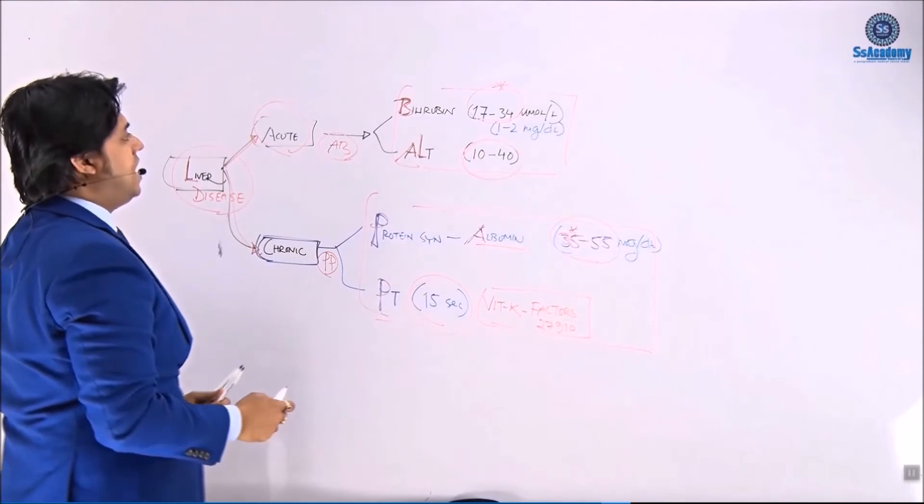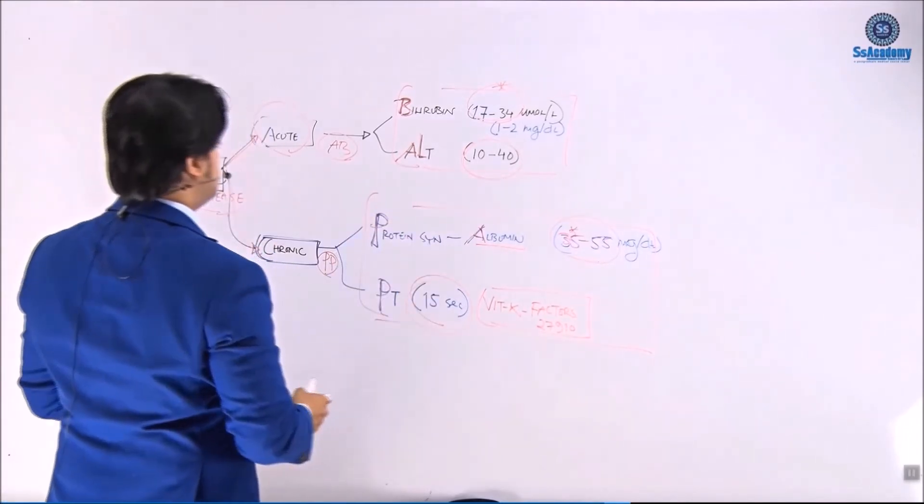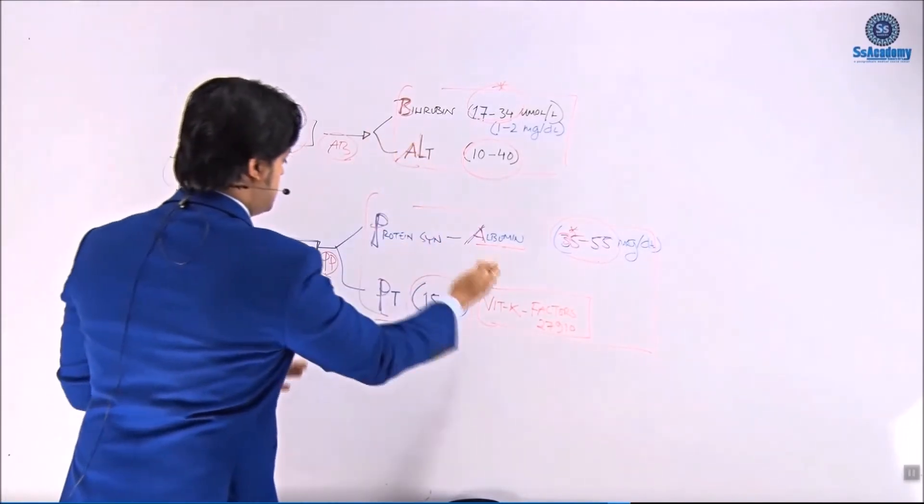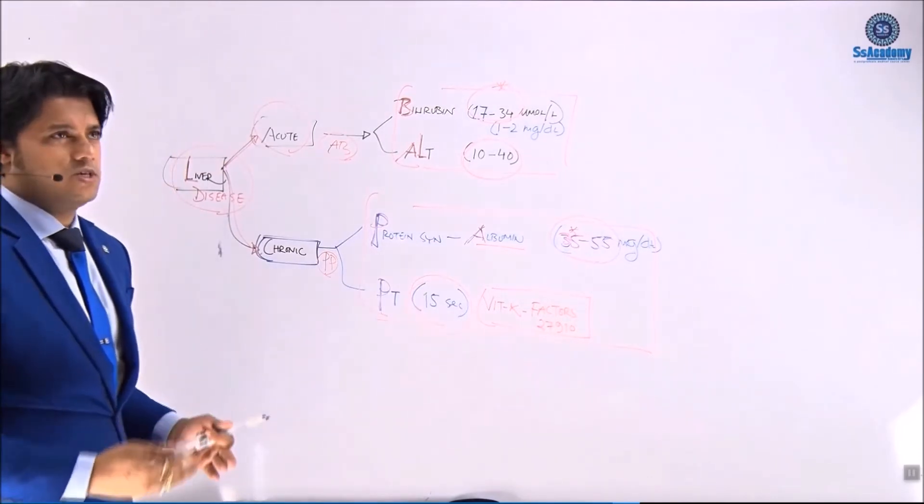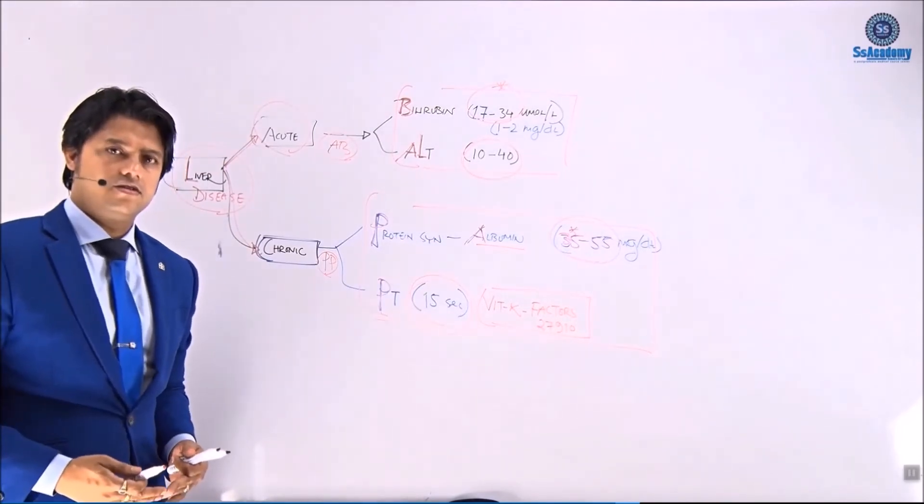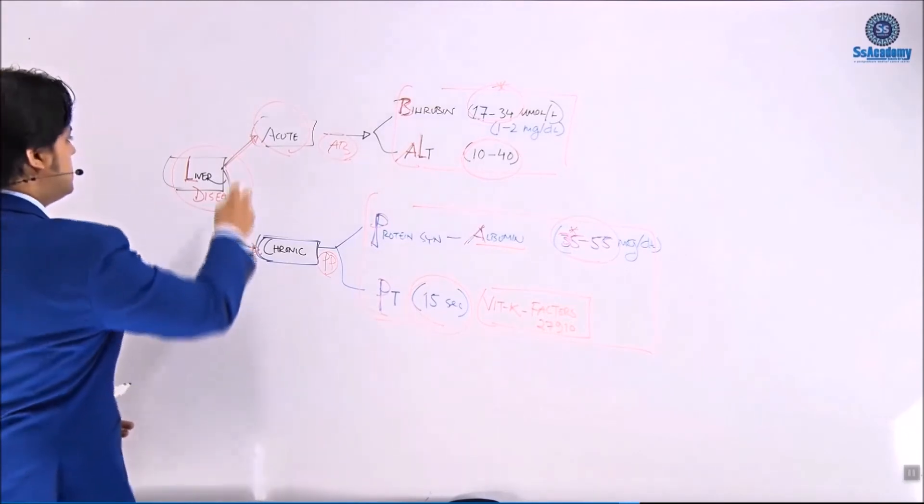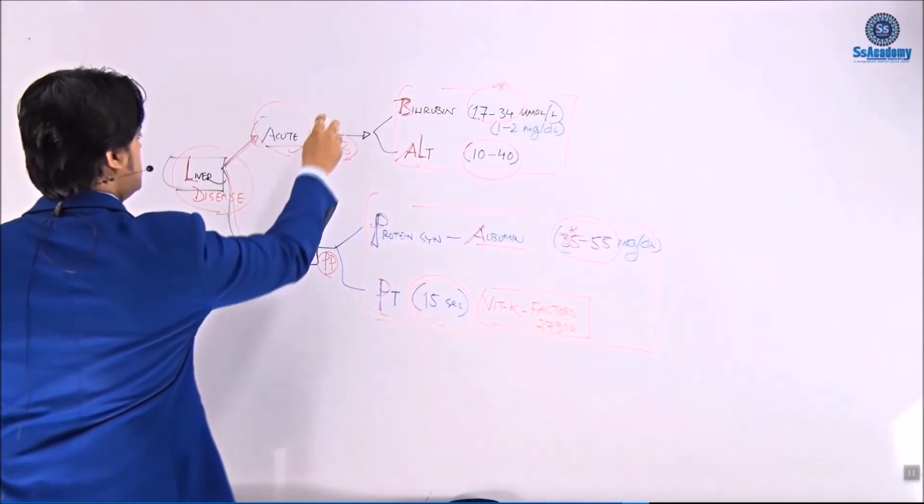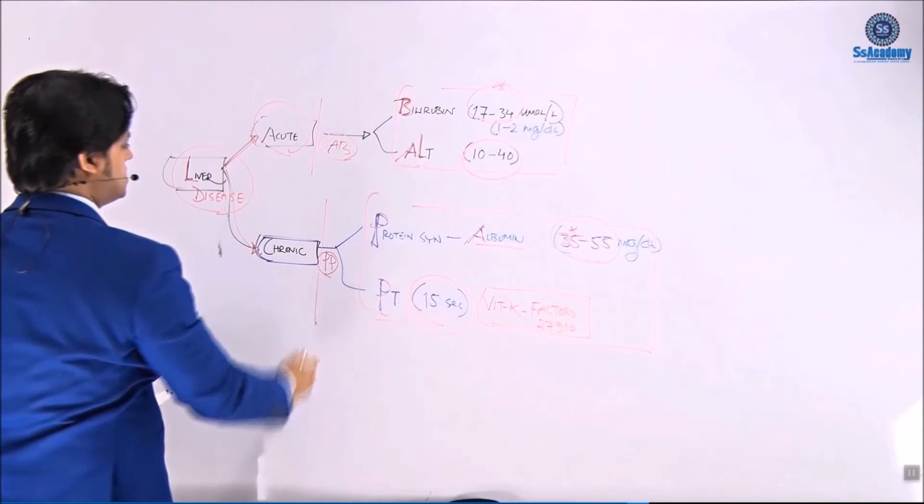So whenever we have the bilirubin, ALT in the normal range and protein and prothrombin time in the normal range, then we can think the liver is functioning good. But if there is a liver damage, there will be acute dysfunction and chronic dysfunction.